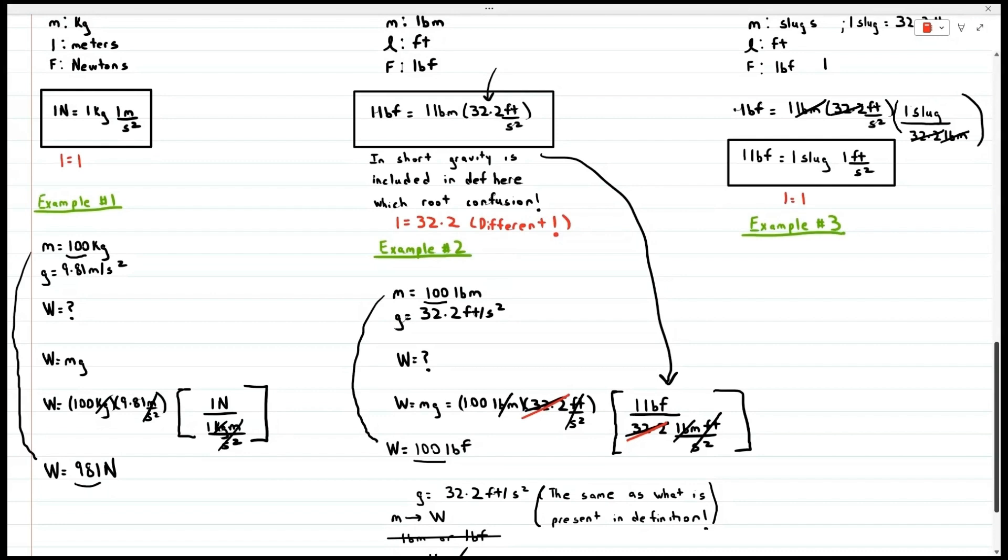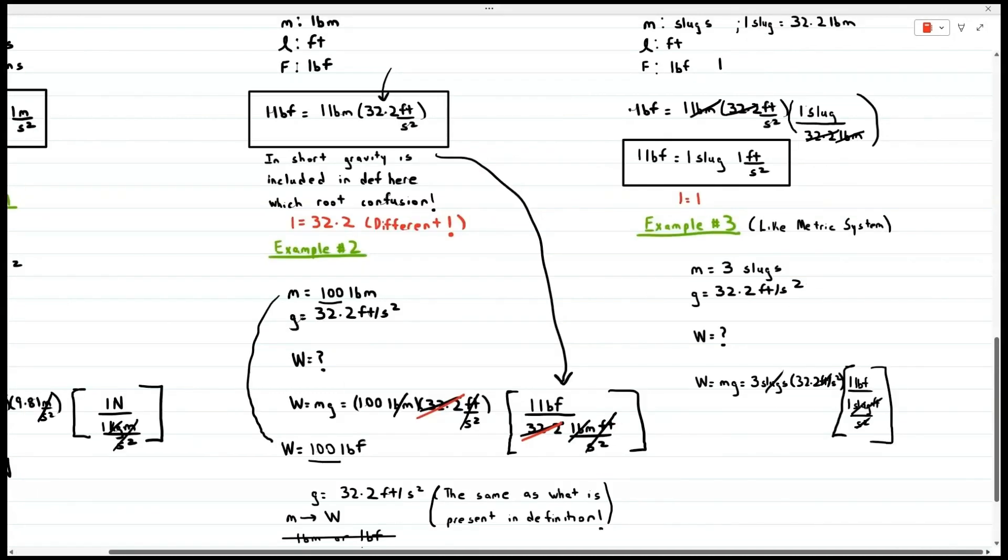Let's do one more example here where we explore the British gravitational system, which is like the metric system. Let's say the mass is 3 slugs and that gravity is 32.2 feet per second squared and we wish to find the weights. We plug into the formula, utilize the definition above, and we see that the weight turns out to be 96.6 pound force.